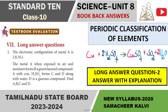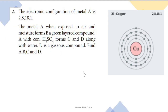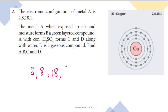The question asks: the electronic configuration of metal A is 2, 8, 18, 1. That is metal A's electronic configuration: 2, 8, 18, 1.